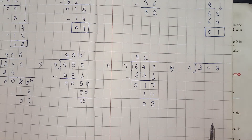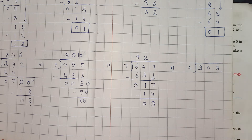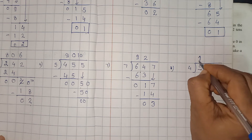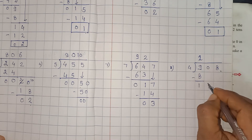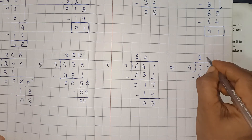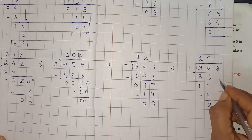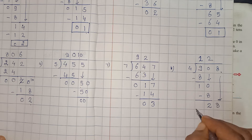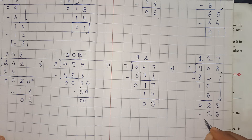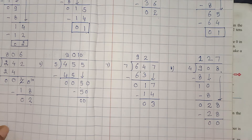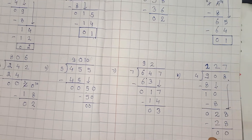Next question is 908 divided by 4. Let's start the solution. 4 twos are 8, minus 8, yahan pe 1 aa gaya. Yeh 0 aapne neeche le liya. 4 twos are 8, again minus kar diya, bachcho. 2 aa gaya yahan pe. 8 ko aap neeche le lo yahan pe. This is 0. And 4 sevens are 28. Minus ho gaya and remainder is 0. Answer for this question is 227 and remainder is 0.